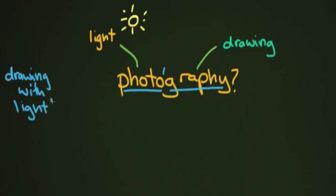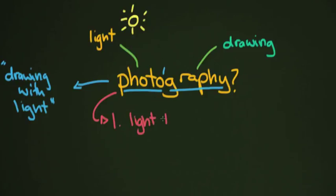I think 'drawing with light' is a really great way of describing what photography is. Photography really is, in a lot of ways, drawing with light. Now, what would be a more functional working definition? I took a quick look in Google and came across a definition in the World English Dictionary. It has two pieces: the process of recording images on sensitized material by the action of light, x-rays, and so on.